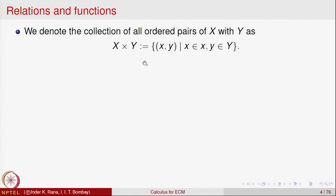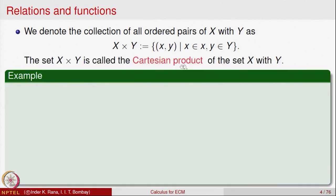The set of all ordered pairs is denoted by X cross Y — also called X times Y. So X cross Y is the set of all ordered pairs of elements of X and Y. This set is called the Cartesian product of the set X with Y. Because there is an order, we should be careful. Let us look at some examples.